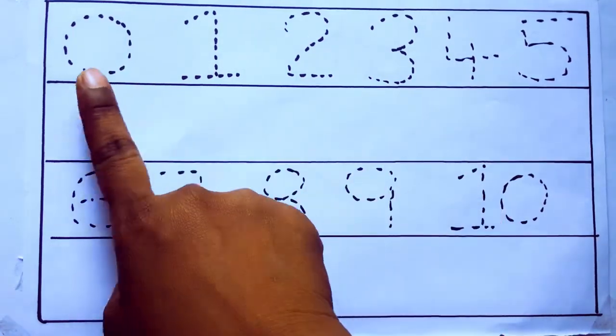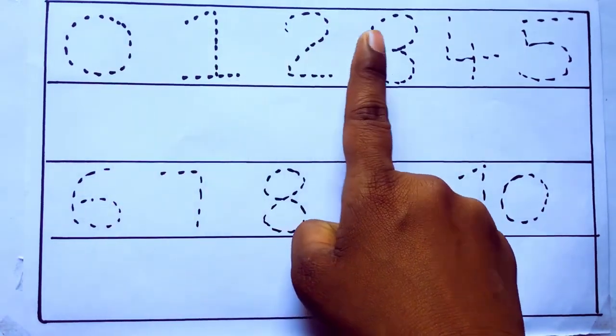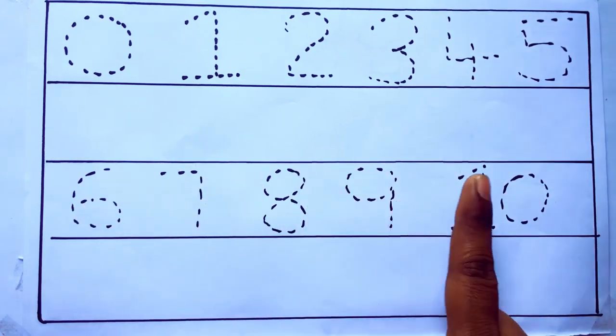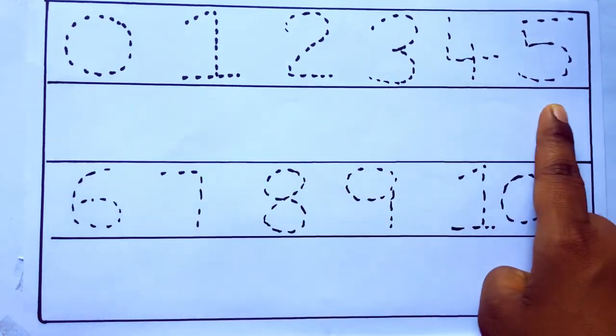0 to 10: 0, 1, 2, 3, 4, 5, 6, 7, 8, 9, 10, and rewriting the numbers.